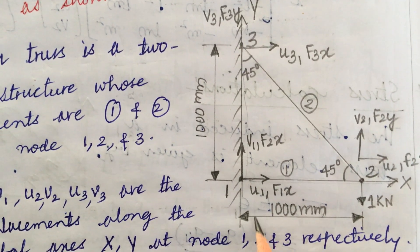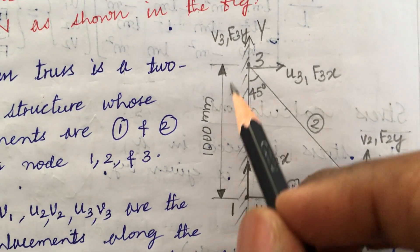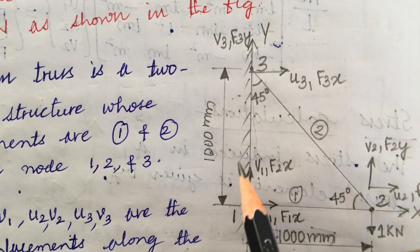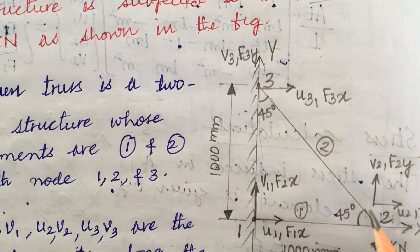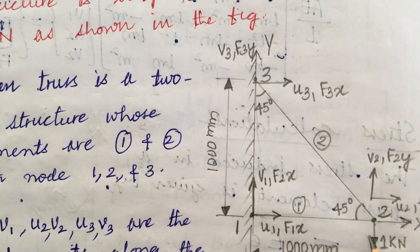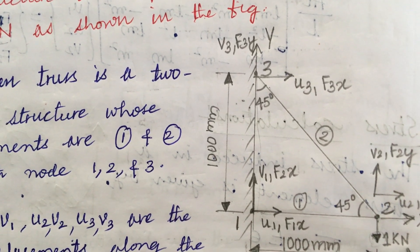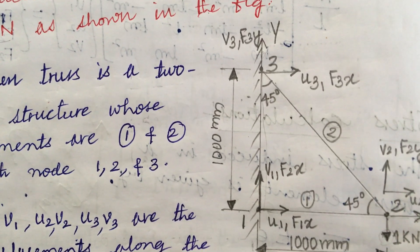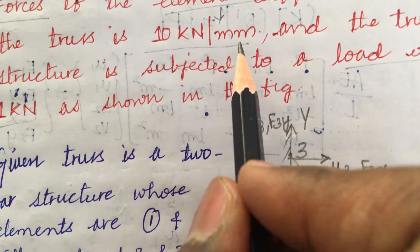The length of element 1 is given as 1000 millimeter and the length of element 2 is also 1000 millimeter. The load is acting at a point shown in the diagram — 1 kilo Newton acting downward — and the stiffness k is 10 kilo Newton per millimeter.